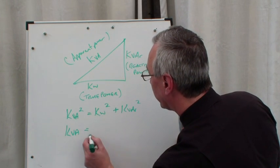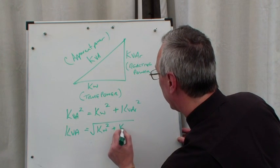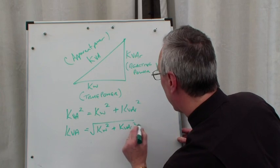The kVA on its own, let's get rid of the squared sign: kVA = √(kilowatts² + kVAR²).